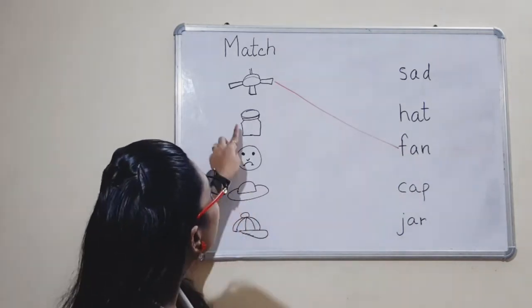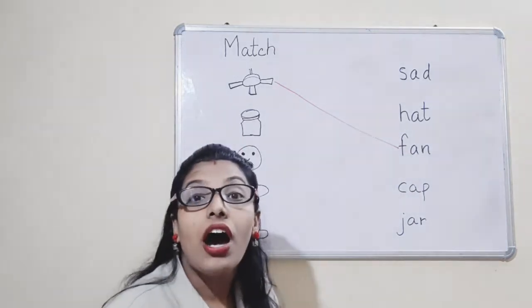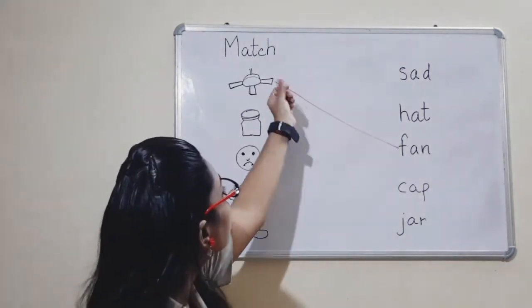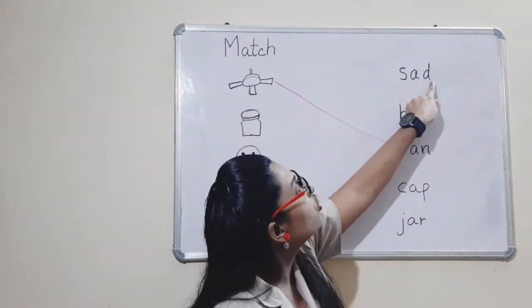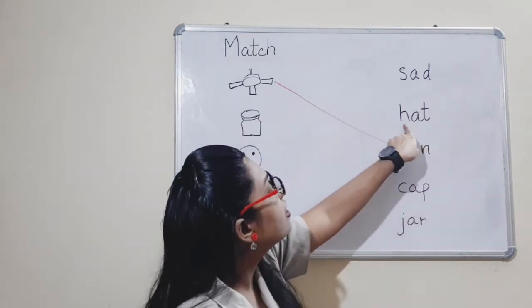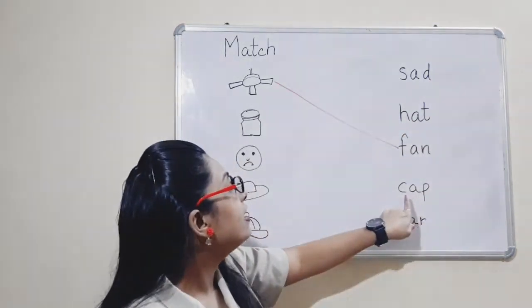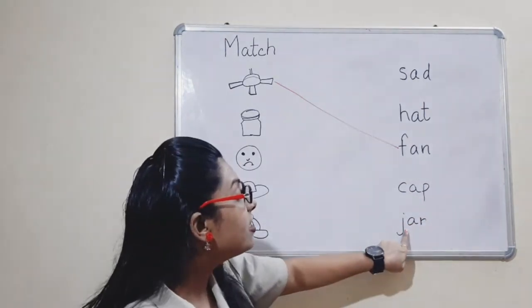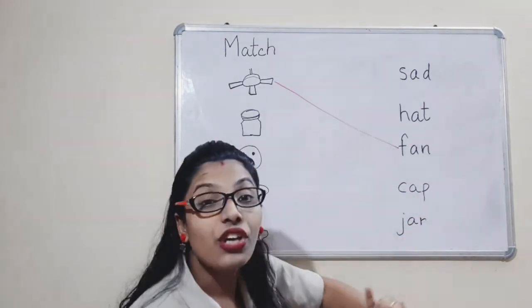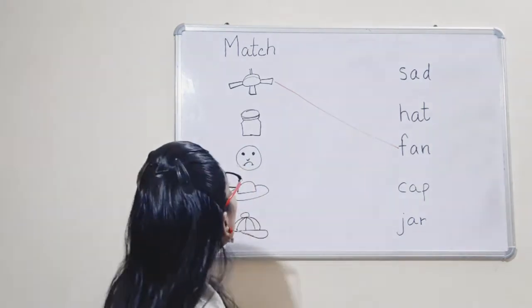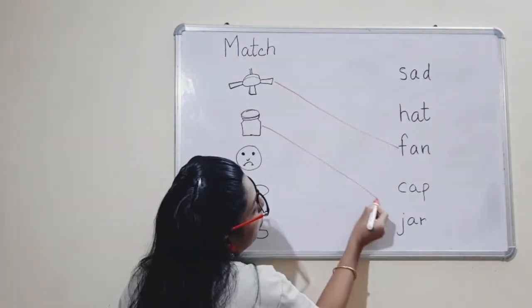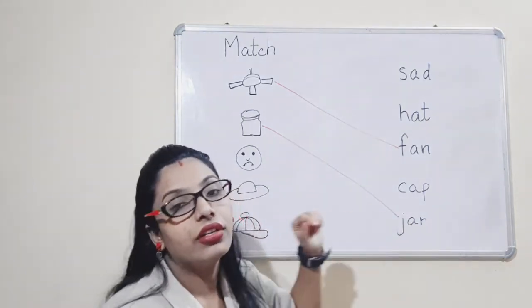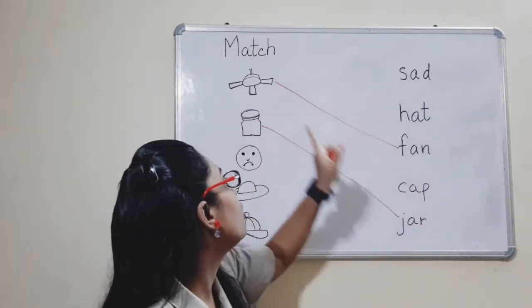Now what is this? J-A-R. Okay, so shall we see. Is this J-A-R? No. Is this J-A-R? No. Is this J-A-R? No. Is this J-A-R? No. Match this picture to its spelling. The spelling is J-A-R.